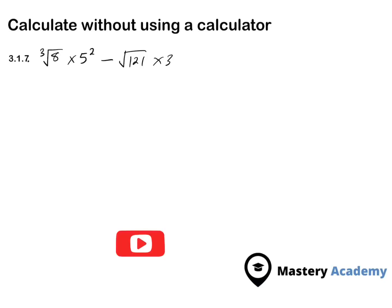Calculate without using a calculator. We have the cube root of 8 multiplied by 5 to the power of 2 minus square root of 121 times 3. We are going to solve this without using a calculator as per the instruction.